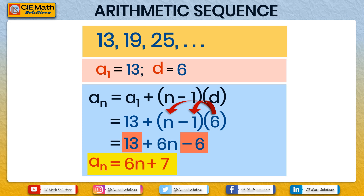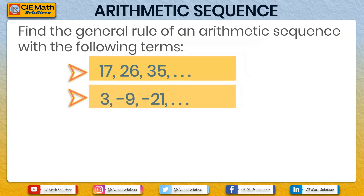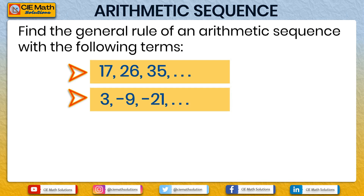Now it's your turn. Find the specific or general rule of an arithmetic sequence with the following terms: 17, 26, 35; and 3, negative 9, negative 21.